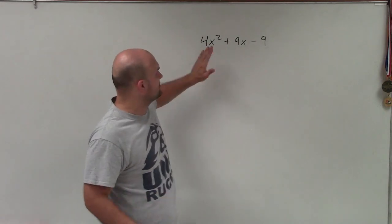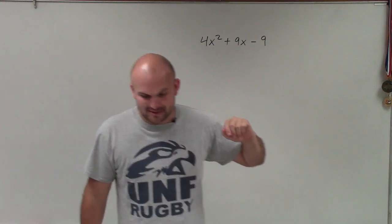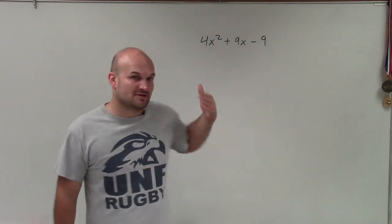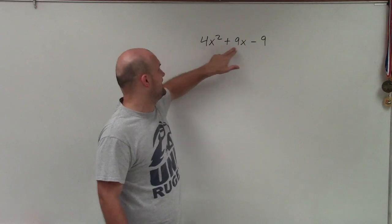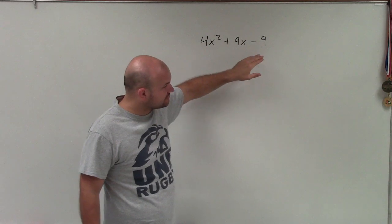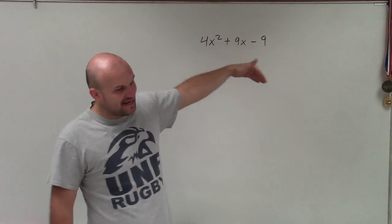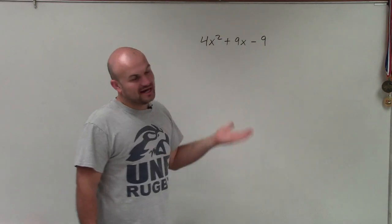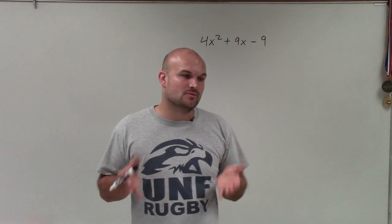When I see that there's an A coefficient, I don't want to use this method. The AC method just takes more time. So I always want to see, can I factor out that four? Unfortunately, four is not a divisor of nine, so I can't factor it out. So I'm going to have to work this.